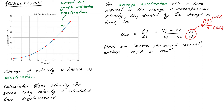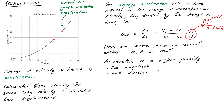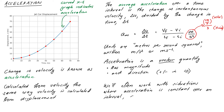Just like velocity and displacement, acceleration is a vector quantity — it has both magnitude and direction. In 1D, direction is simply plus or minus, corresponding to right and left. Most of the time in this course we'll deal with constant acceleration, so sometimes we'll write A when we mean A_avg since in that situation it's the same thing.